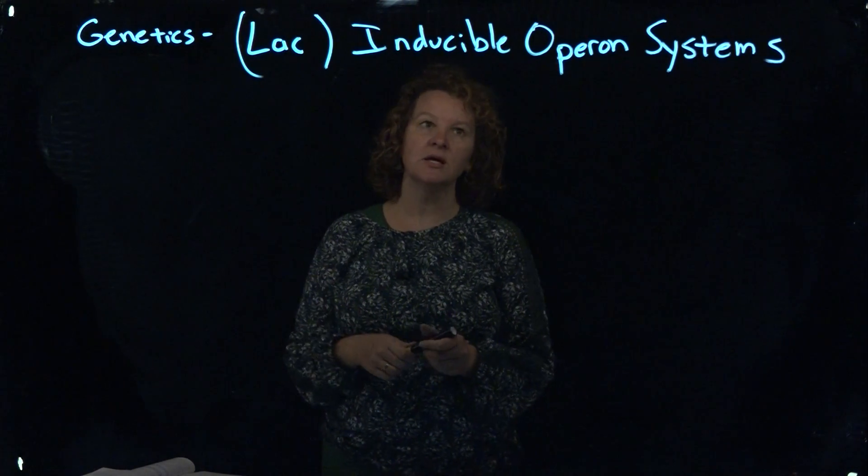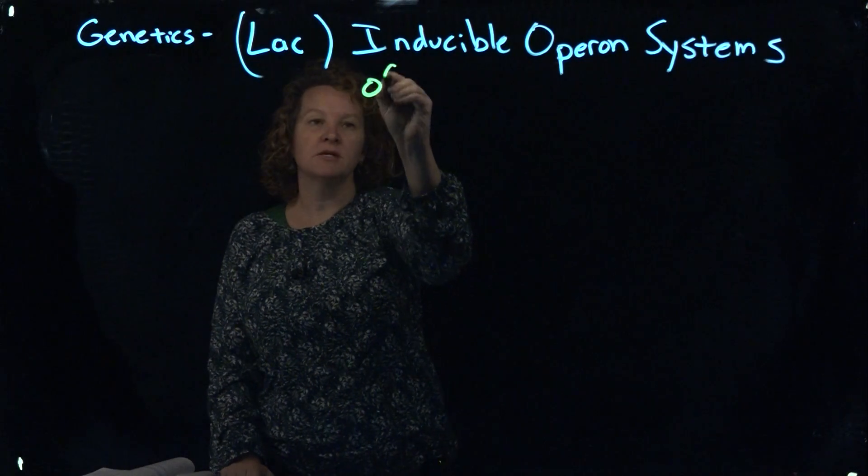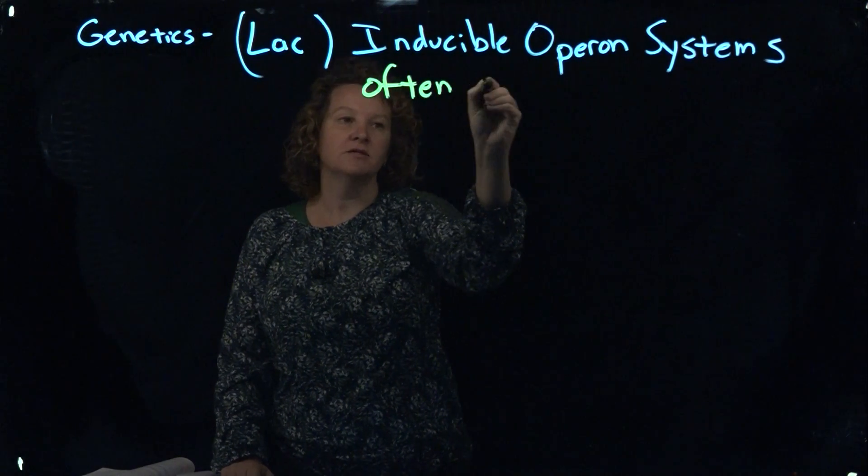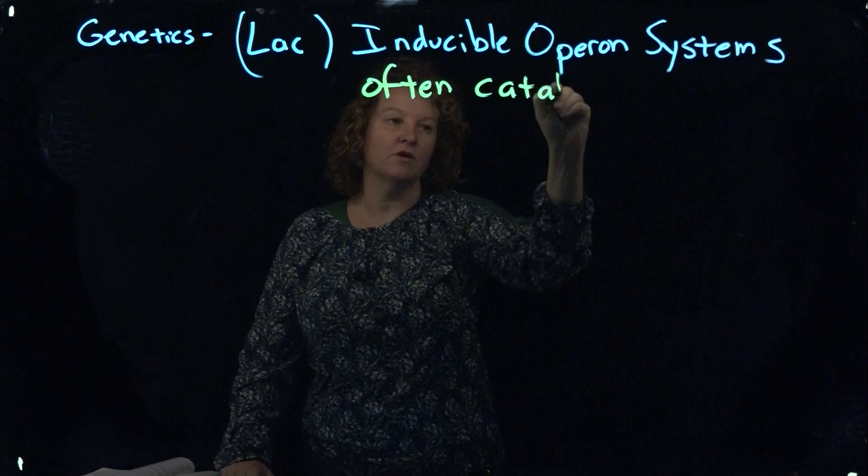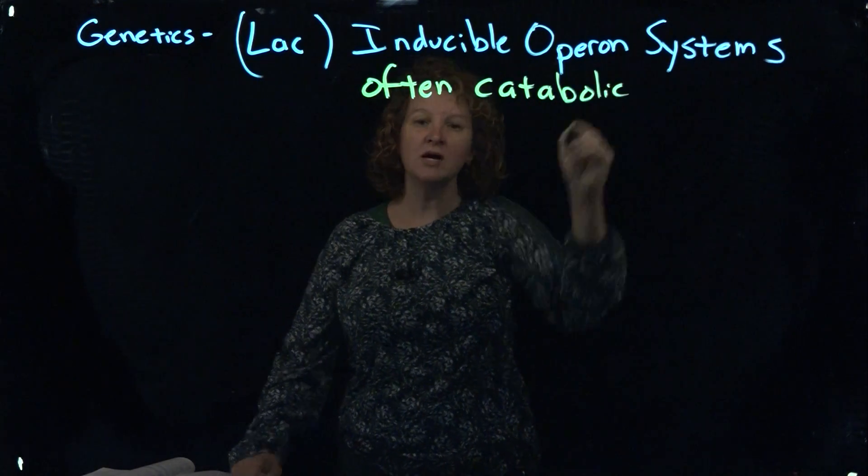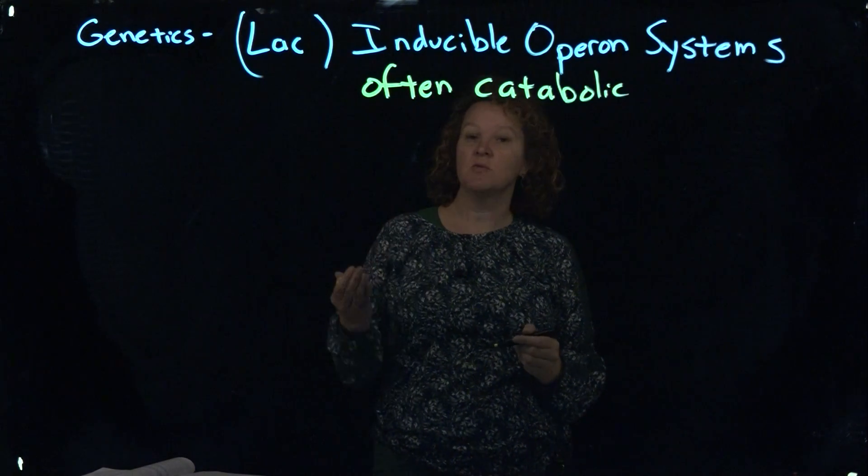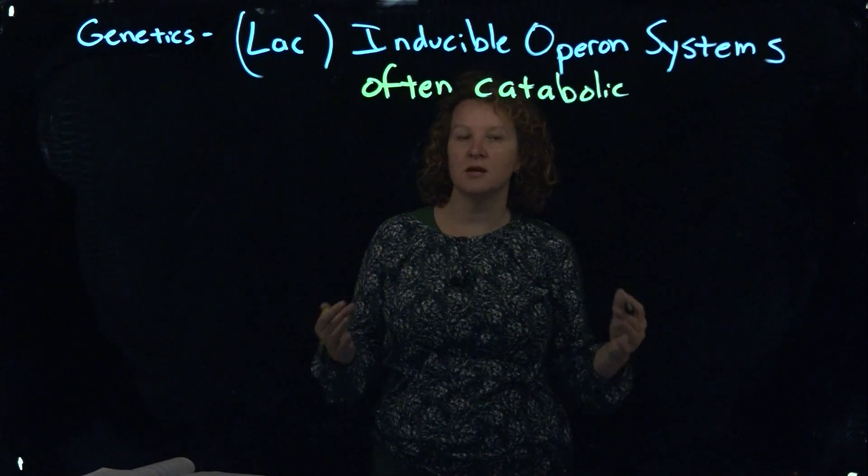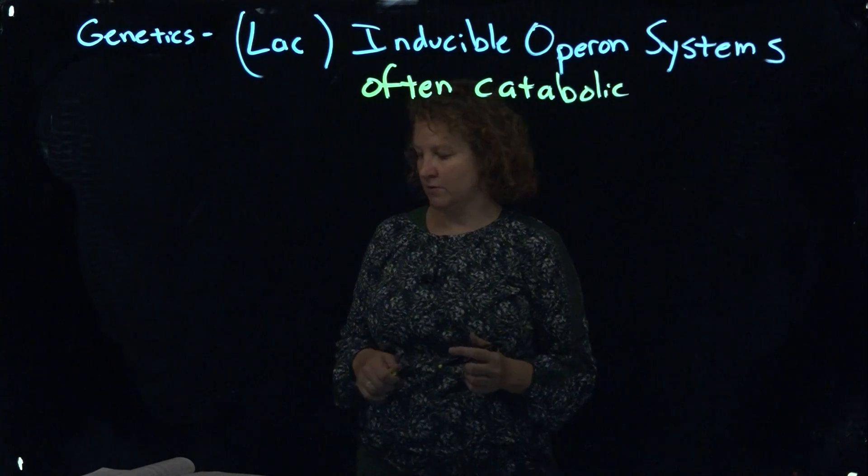This is a response system, so often these are catabolic-type pathways because it will change when that substrate becomes available. So if there's a particular carbohydrate to break down, that system will be triggered to turn on so that you're synthesizing the enzymes to break down that particular molecule.